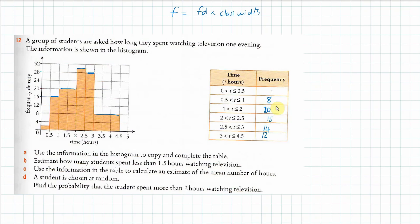Now, how many students spent less than 1.5 hours watching television? 1.5 is halfway through one boundary, so half of that group spends less than 1.5 hours. Adding that to the 8 and the 10, we should get an answer of about 19.